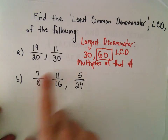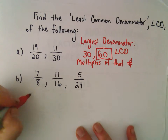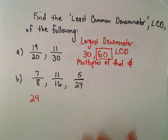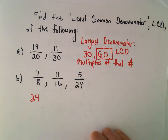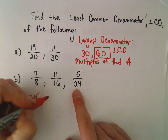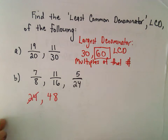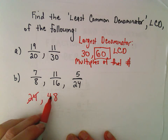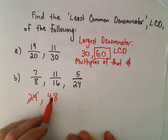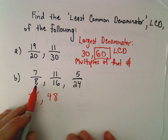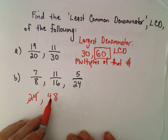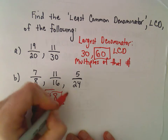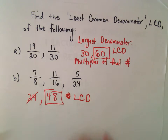Let's look at the next example. We've got 7 over 8, 11 over 16, and 5 over 24. The largest number is 24. Well, 8 does divide into 24, but 16 doesn't divide into 24, so that's not going to be the least common denominator. Let me look at another multiple of 24, say 48. 8 goes into 48 — since 8 goes into 24, it's going to go into any multiple. 16 also goes into 48, and 24 goes into 48 because we're looking at multiples. So 48 is going to be our least common denominator.